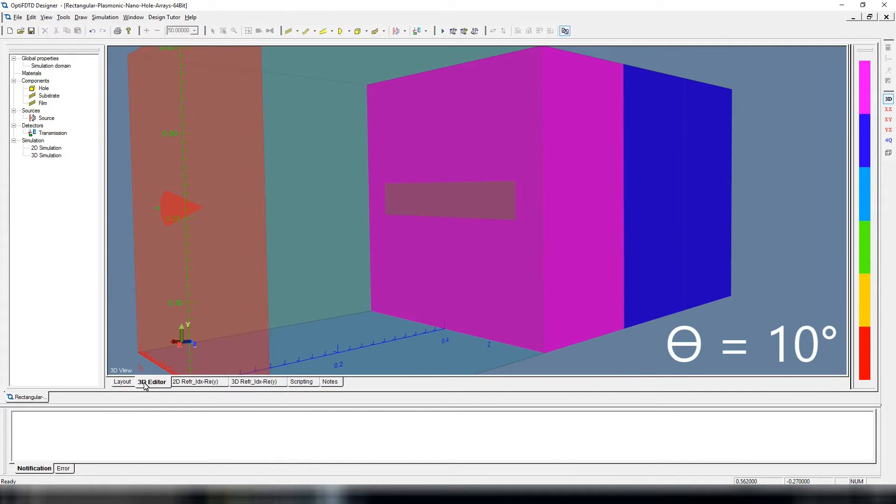The dependence on the unequal scaling factor, theta, is simulated by multiple iterations, ranging from 10 to 55 degrees, with 45 degrees corresponding to a square.